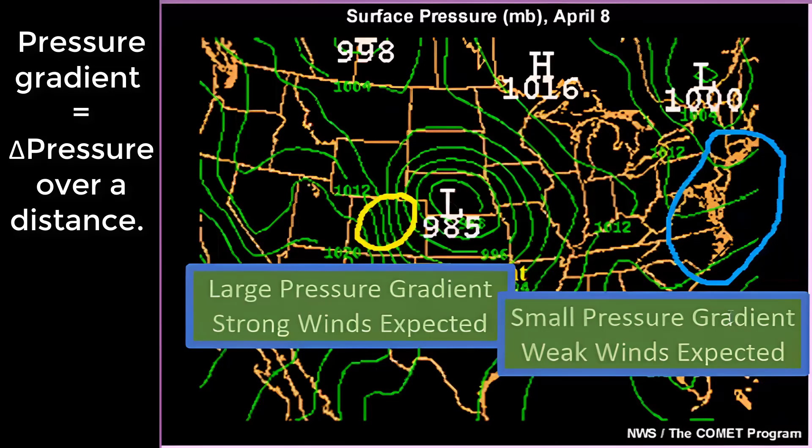Pressure gradient equals change in pressure over a distance. In the case of air pressure, large pressure gradients have closer isopotentials and strong winds are expected. Small pressure gradients have more spread out isopotential lines and weak winds are expected.